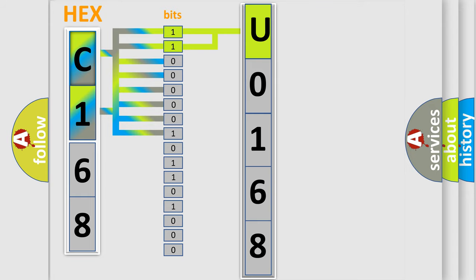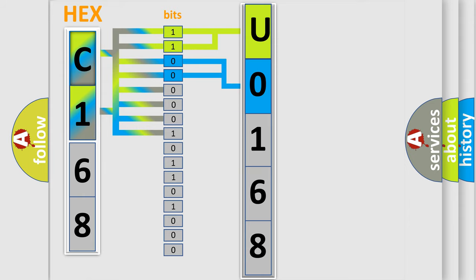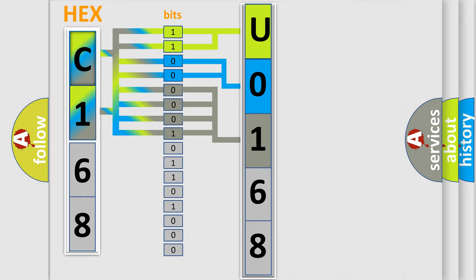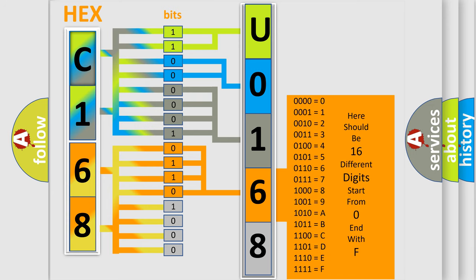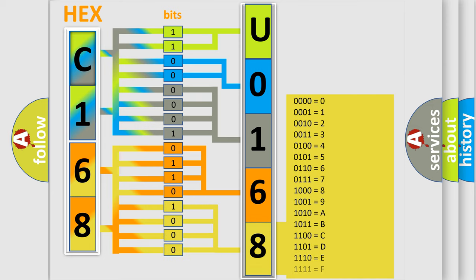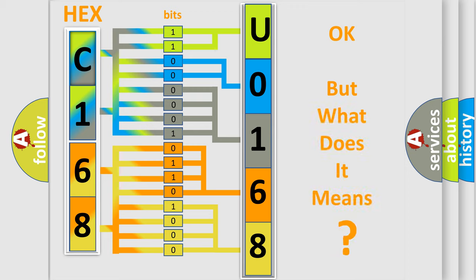The next two bits determine the second character. The last bits of the first byte define the third character of the code. The second byte is composed of a combination of eight bits. The first four bits determine the fourth character of the code, and the combination of the last four bits defines the fifth character. A single byte conceals 256 possible combinations. We now know in what way the diagnostic tool translates the received information into a more comprehensible format. The number itself does not make sense to us if we cannot assign information about what it actually expresses.